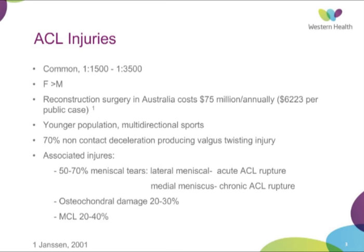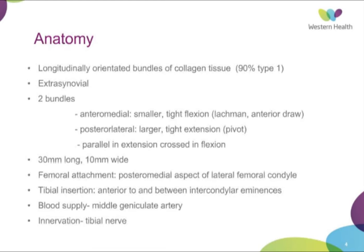You usually see ACL ruptures in the younger population, and that's due to the more active and they play multi-directional sports. 70% of injuries are due to non-contact acceleration mechanisms, producing a valgus or twisting-type injury with external rotation of the knee. There's quite a high incidence of associated injuries — reported up to 50 to 70% of associated meniscal tears. In the acute stage of an initial ACL rupture, it's usually a lateral meniscal tear. With chronic ACL ruptures, you tend to see more medial meniscal tears. Osteochondral damage is reported in 20 to 30%, and an associated MCL sprain or tear in 20 to 40%.